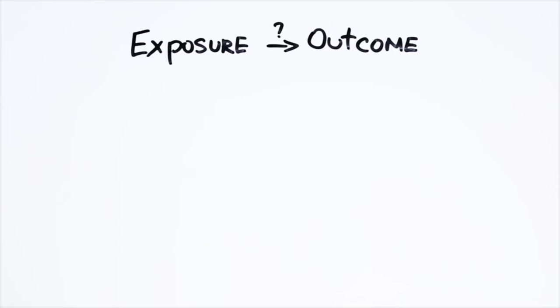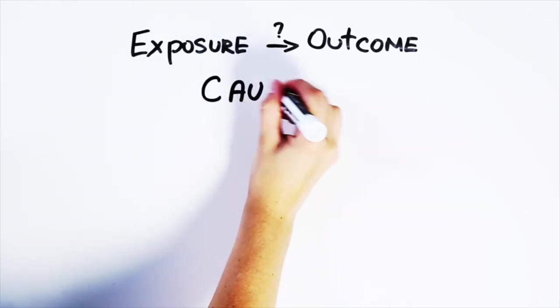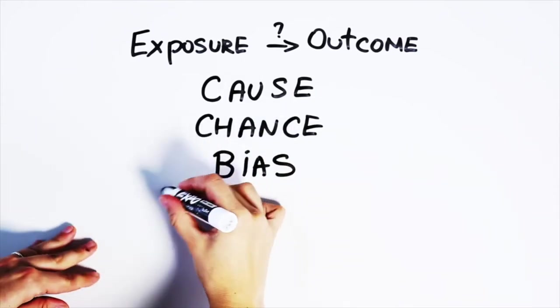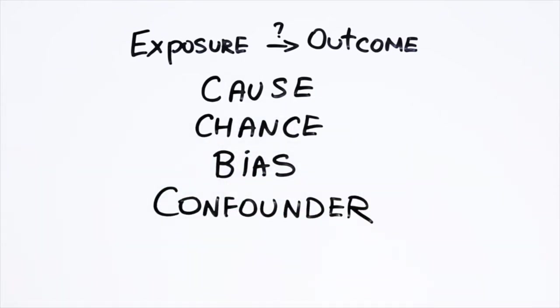When examining relationships between exposures and health outcomes, there's a number of reasons why we might see an association. These include an actual cause, pure chance, bias, and what epidemiologists call confounding, other things interfering with what we observe.